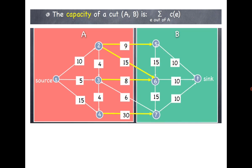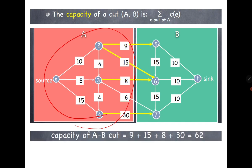In one more example, the orange set is A, and there are four edges coming out of it, giving a capacity of 62.